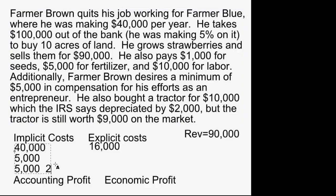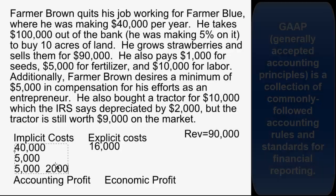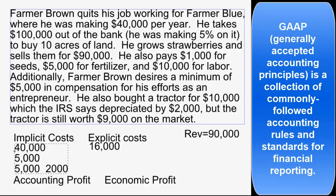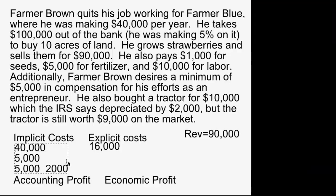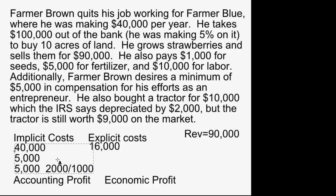There are two ways to measure depreciation. Accountants do it according to GAAP — generally accepted accounting principles in the United States — which gives $2,000. But economists look at depreciation differently: how much has the value of the asset actually gone down? You bought the tractor for $10,000, and you could sell it for $9,000, so the real depreciation is $1,000. So we have two versions of this implicit cost — $2,000 by the accountant's rule book, or $1,000 by the economist's measure.